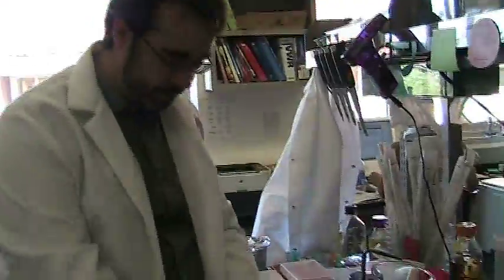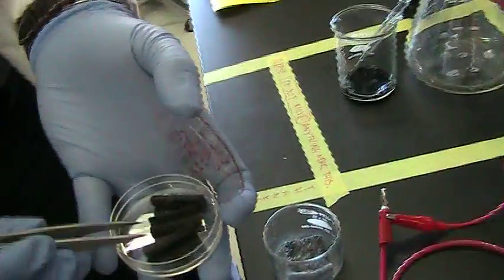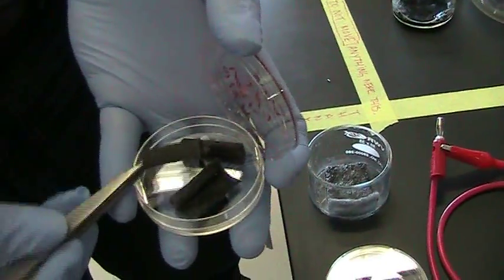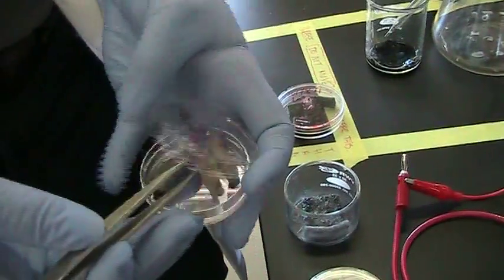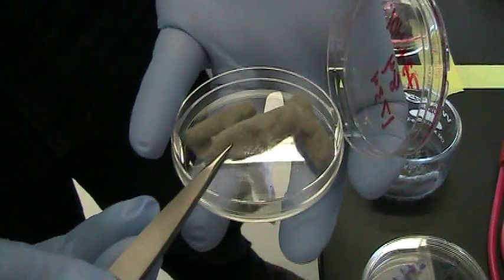I have here several filters that you can see we've made that are different. This filter has just been treated with the carbon nanotubes and you can see it looks black after drying. And this one has just been treated with silver and so you can see it's kind of gray looking.